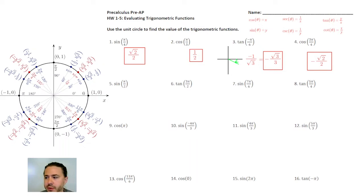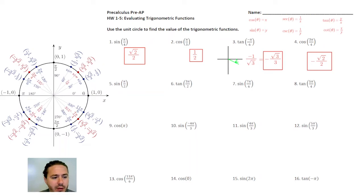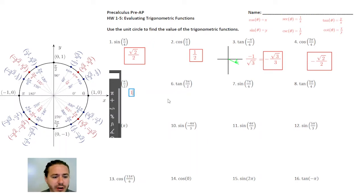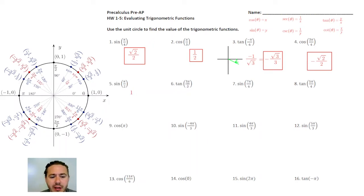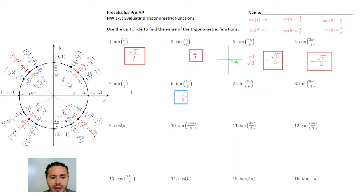Sine of π over 2: π over 2 is at the coordinate (0, 1), and since sine refers to the y value, we pull that y value which is just 1. So sine of π over 2 equals 1. Tangent of 3π over 2 is going to be y over x. At that coordinate it's negative 1 divided by 0, which you can't do — you cannot divide by 0, so we call that undefined.